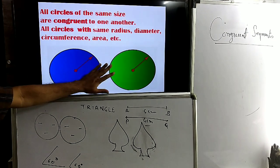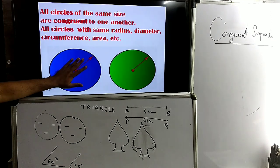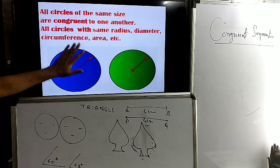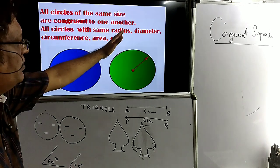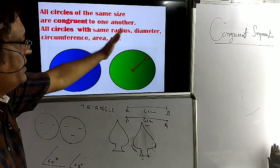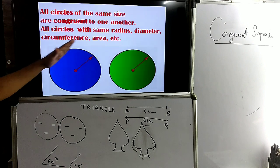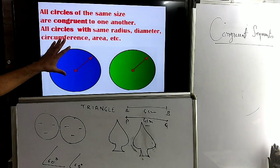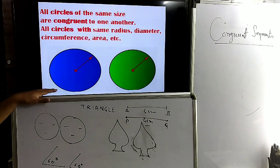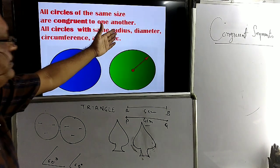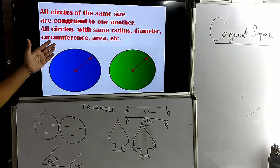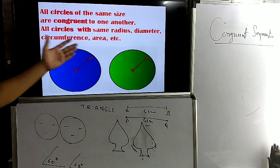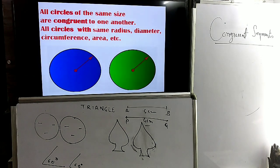These two circles are congruent. When two circles are congruent, they have the same radius, or same diameter, or same circumference, or same area. Two circles are congruent if any one of these parameters is the same: same radius, same diameter, same circumference, or same area.